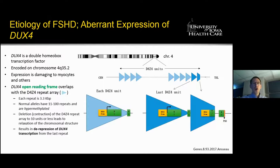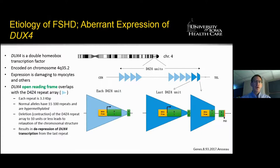The cause of FSHD really boils down to the aberrant expression of a gene called DUX4. DUX4 is a homeobox transcription factor present on chromosome 4, whose expression is normal in early developmental stages. But beyond that time point, it's very toxic to the cells that it's expressed in, in particular muscle cells, in the adolescent and adult individual.